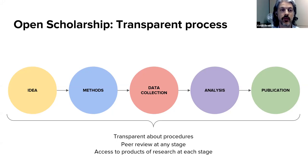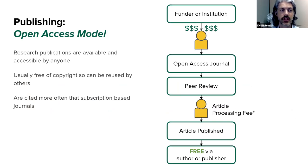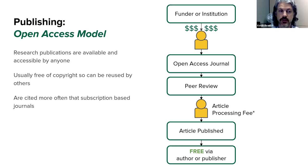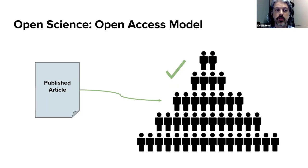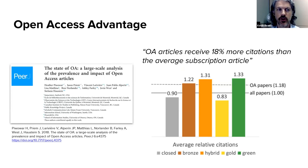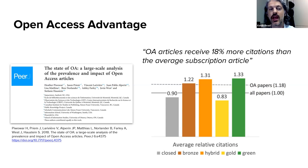This also leads to the open access model for publication. The funder or institution pays you as the researcher; you publish in an open access journal where it's peer reviewed — sometimes with fees, sometimes without — and that article is free to everybody. Open access articles receive 18% more citations than the average subscription article, because if your research is open and free, anybody can access it and use it for their own research, giving you credit. If your research is closed, only a smaller percentage of people can access and use it.